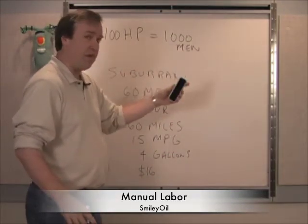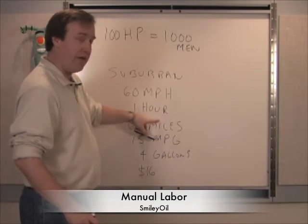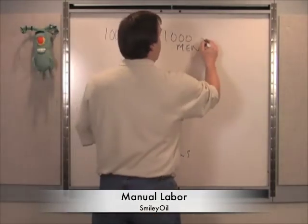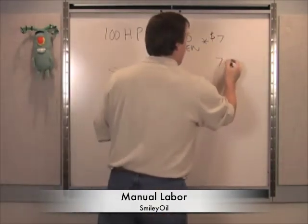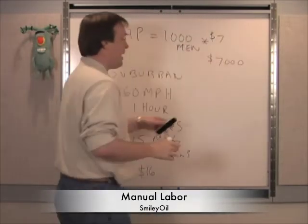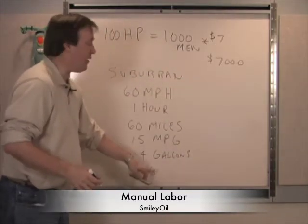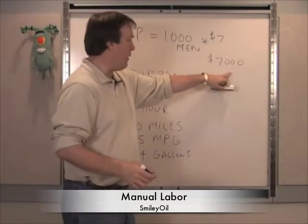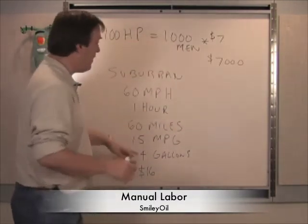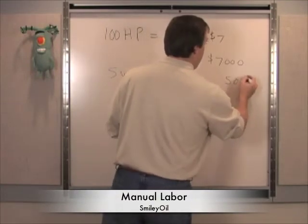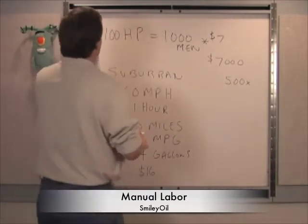Now let's make the equivalent calculation of men to horsepower — the amount of energy we put in for one hour at seven dollars an hour minimum wage. This Suburban would have taken $7,000 in manual labor, equivalent to just $16 in gasoline. That gives us a ratio of about 500 to one — $7,000 divided by $16 is roughly 500.